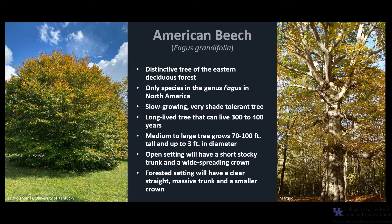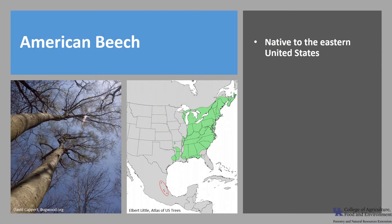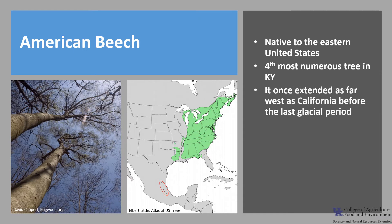Common forest associates include sugar and red maple, yellow birch, basswood, black cherry, eastern white pine, hickories, and oaks. American beech is native to the eastern United States and common in Kentucky. It's the fourth most numerous tree in the state, according to the U.S. Forest Service Forest Inventory Analysis. Although beech is now confined to the eastern United States, except for pockets in Mexico, it once extended as far west as California and probably flourished over most of North America before the last glacial period.